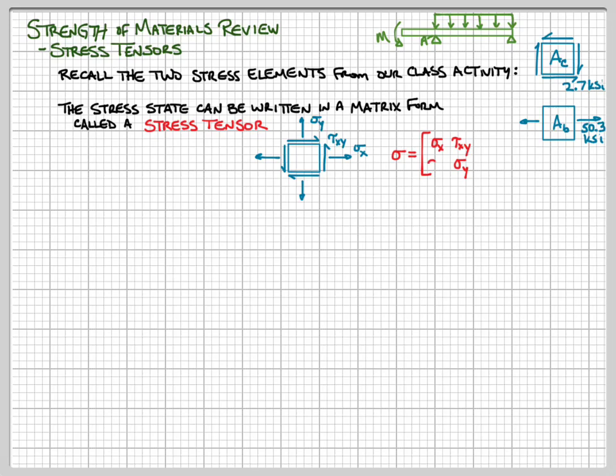In general, for a 2D state of stress we can write our stress tensor with the two normal stresses sigma_x and sigma_y on the diagonal, and the shear stresses tau_xy on the off-diagonal. Tau_yx is usually the same value as tau_xy.